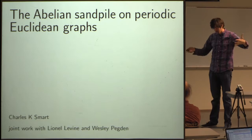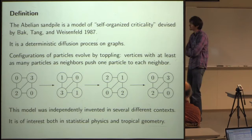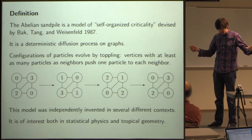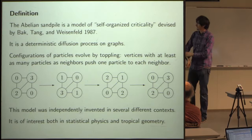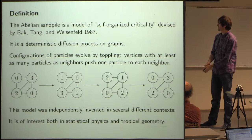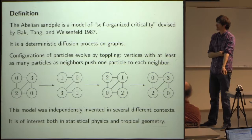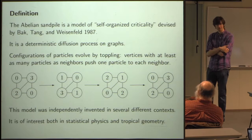When you talk about the sandpile, you have to start at the beginning, so I need to tell you what the sandpile is. The Abelian sandpile is a model that comes from statistical physics — it's a model of self-organized criticality. I'm not going to explain what that means; you should ask Lionel. My understanding is that it's a failed physical model that has turned into interesting math.